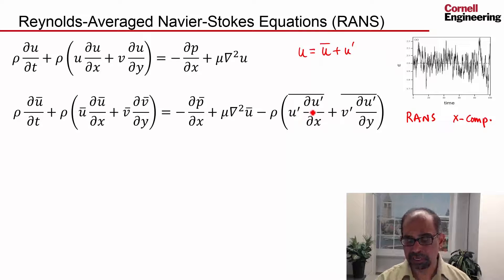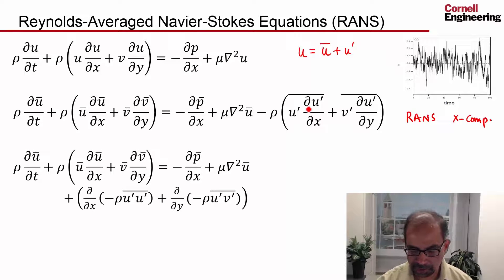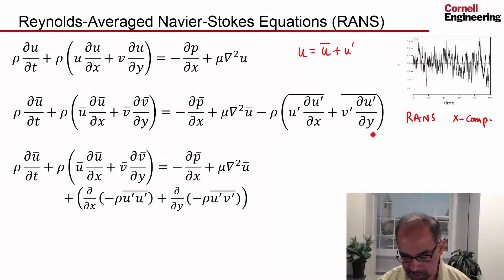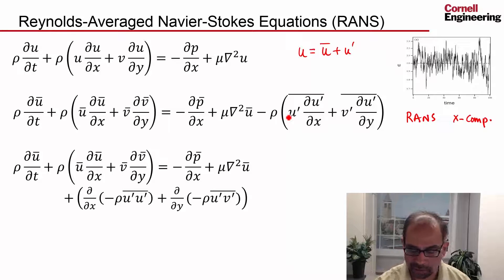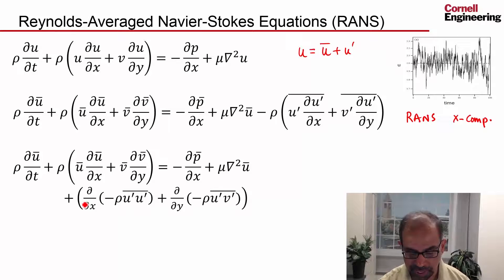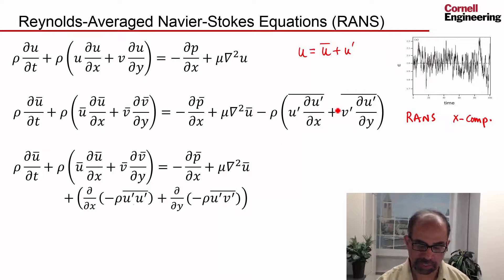I can write this term a little bit differently if I use continuity, as I've shown over here. Essentially what I've done is used continuity and taken the derivatives out of the averaging. The averaging is an integral, so you can take the derivative out of the integral and get that term. You can convince yourself, using the chain rule, that if you differentiate these terms and use continuity, you will get that.